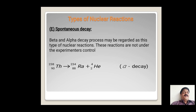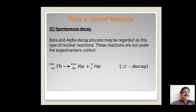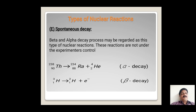Thorium spontaneously disintegrates to another element, radium. During this process, it emits an alpha particle. This type of nuclear reaction is also known as alpha decay. For beta decay, hydrogen splits into two light nuclei — hydrogen and an electron — emitting beta particles, that is, electrons. Such types of nuclear reactions are also called beta decay nuclear reactions.